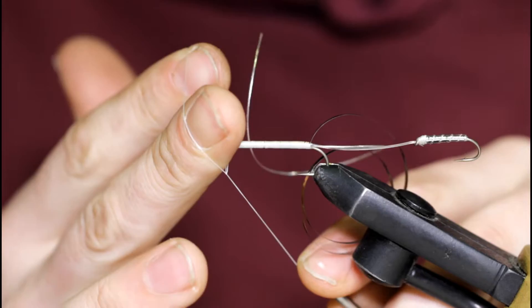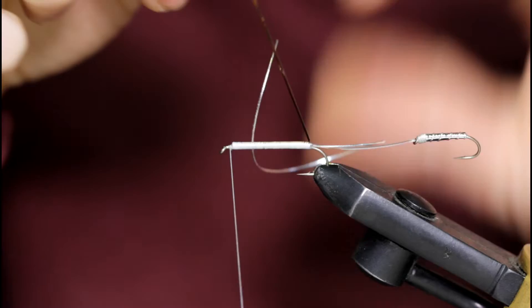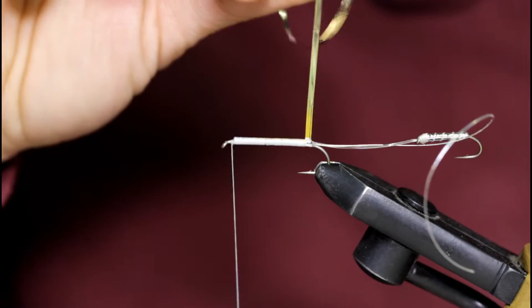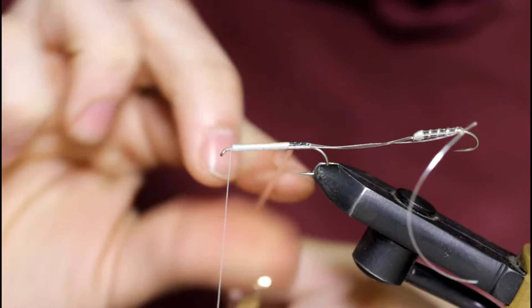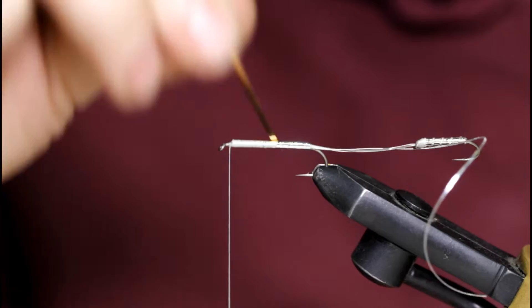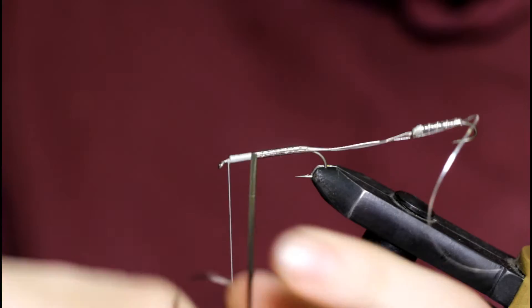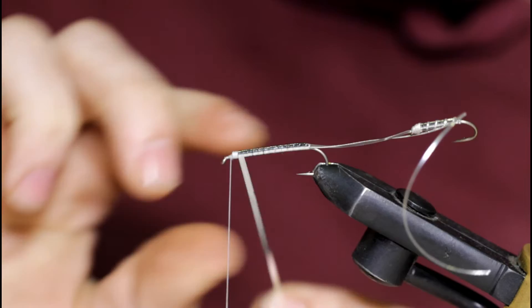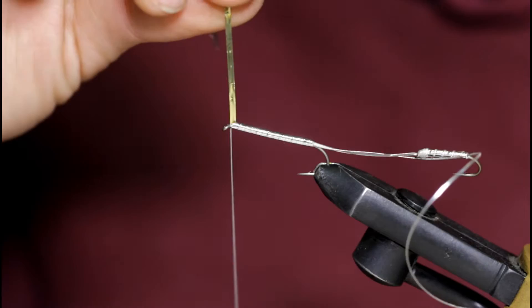And I'll grab the tinsel. And wrap underneath and towards me. Nice even touching turns. And the white thread is nice with this silver tinsel. Because if you make a mistake, it doesn't show through as much as if you had a black thread on top of it.